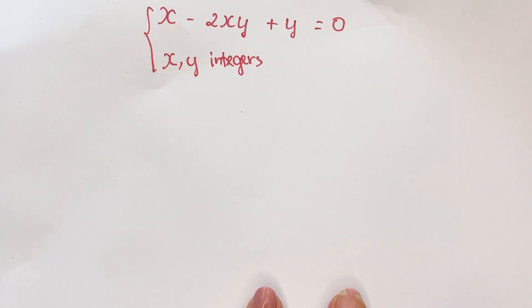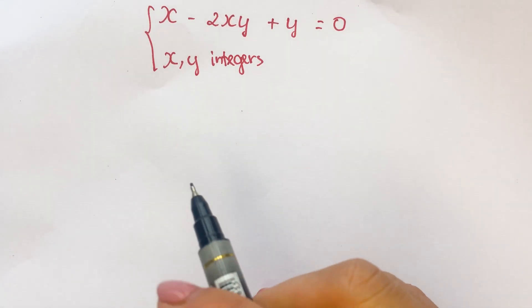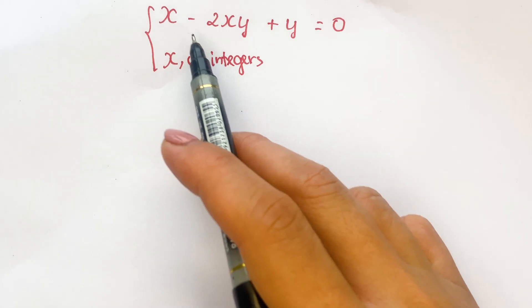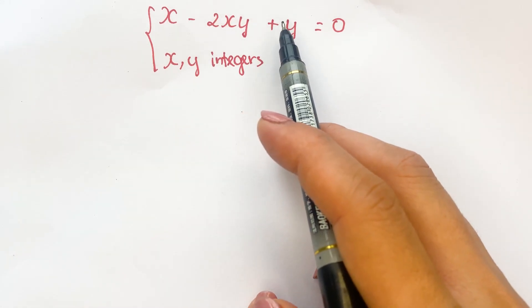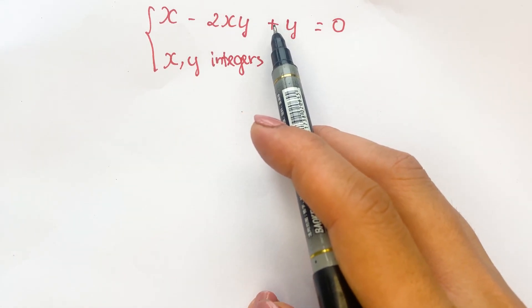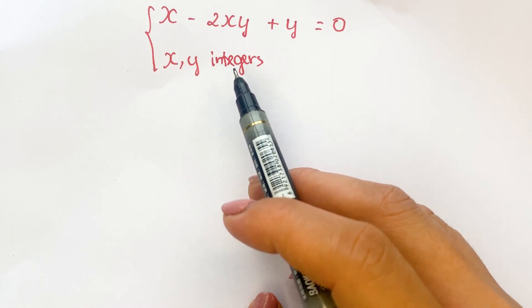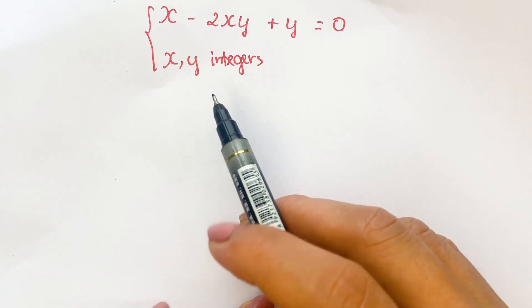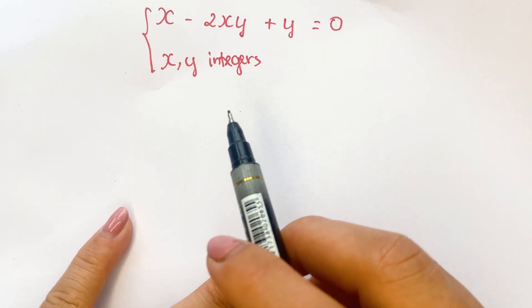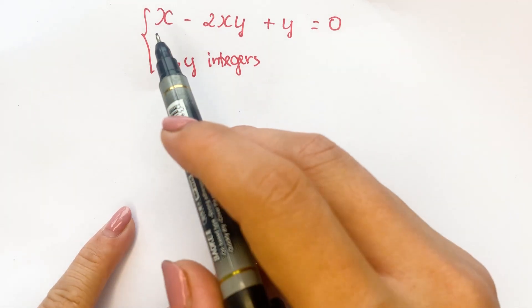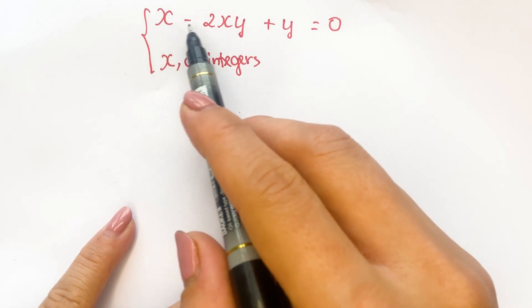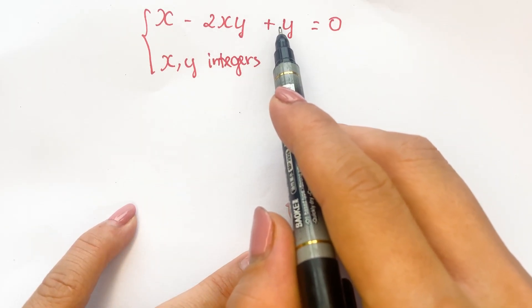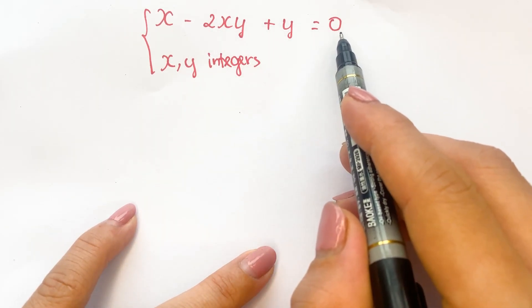Hello everyone. How to find the value of x and y in the equation — x and y are integers. Everyone can see that x minus 2xy plus y equals 0.